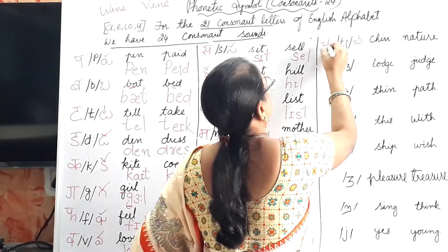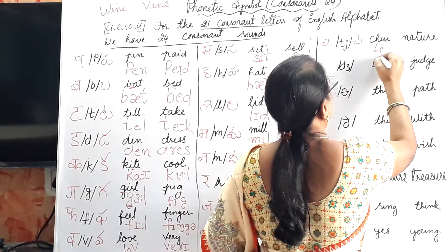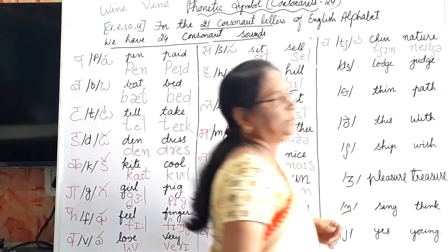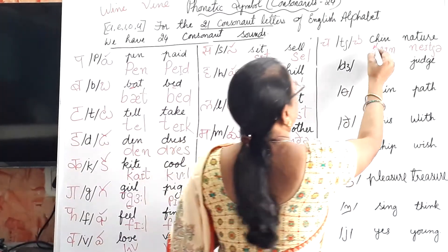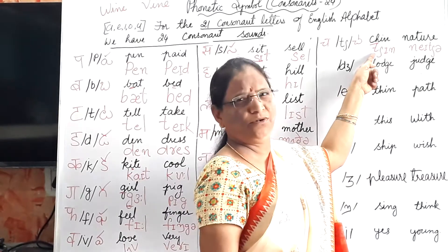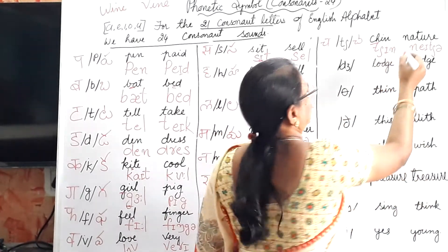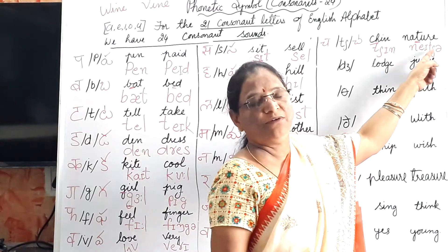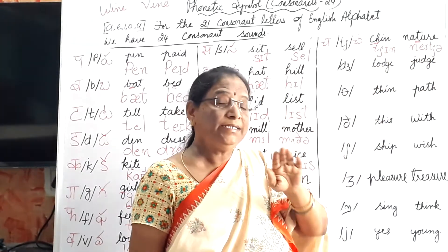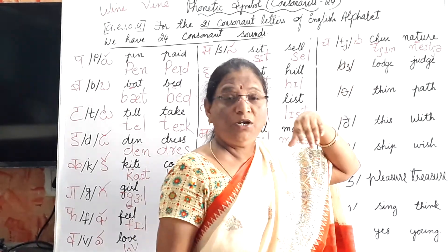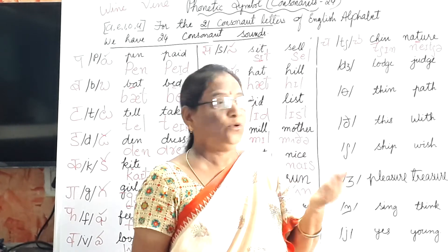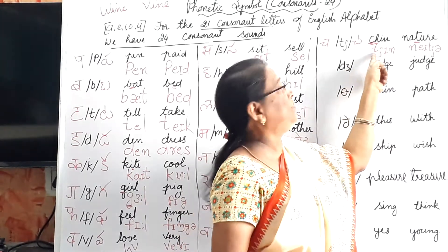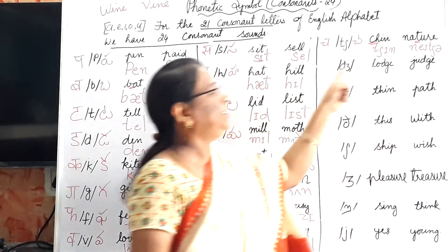This is the /tʃ/ (cha) sound. Chin, nature. In 'chin,' CH gives the /tʃ/ sound. In 'nature,' T gives the /tʃ/ sound. So there is no direct relation between letters and sound — no relation between letters and pronunciation. English pronunciation depends totally on phonetic symbols.